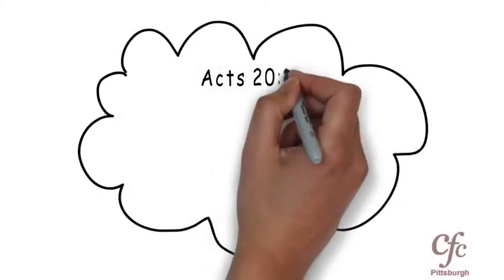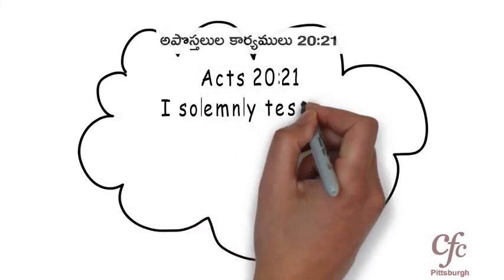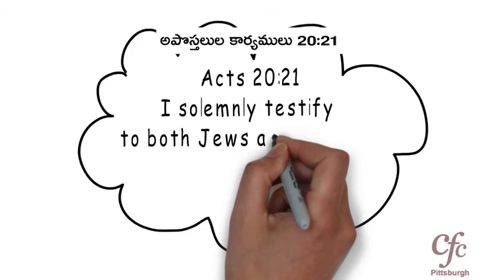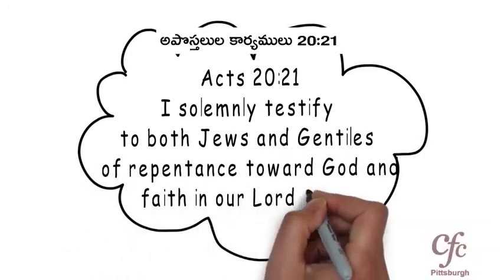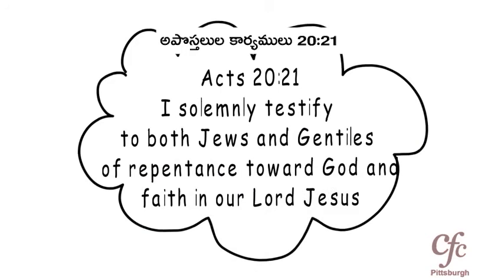In Acts 20 verse 21, he says Jews and Greeks, which means the whole world. I solemnly testify to all people in the world: repentance toward God and faith in our Lord Jesus Christ. That's it.